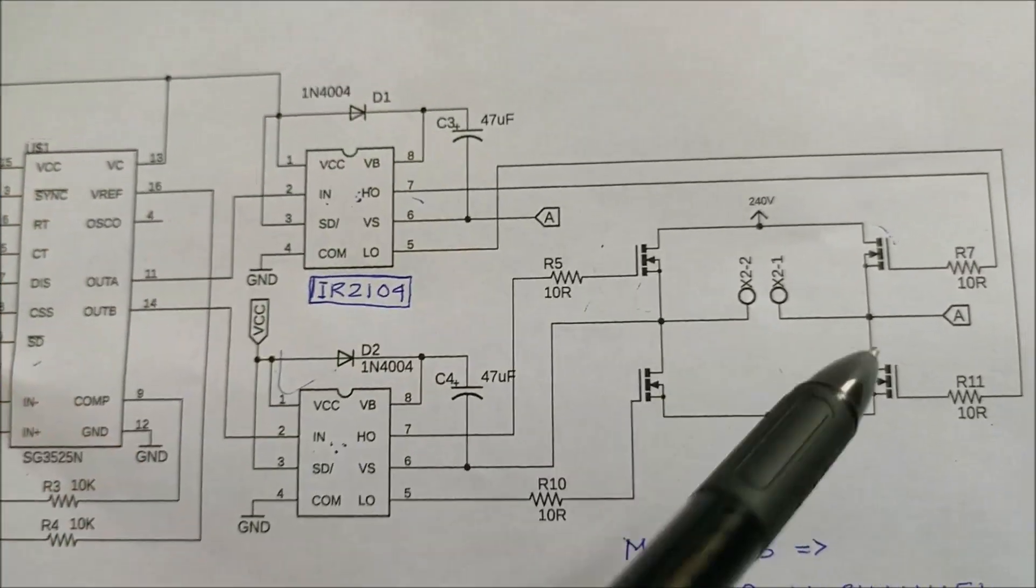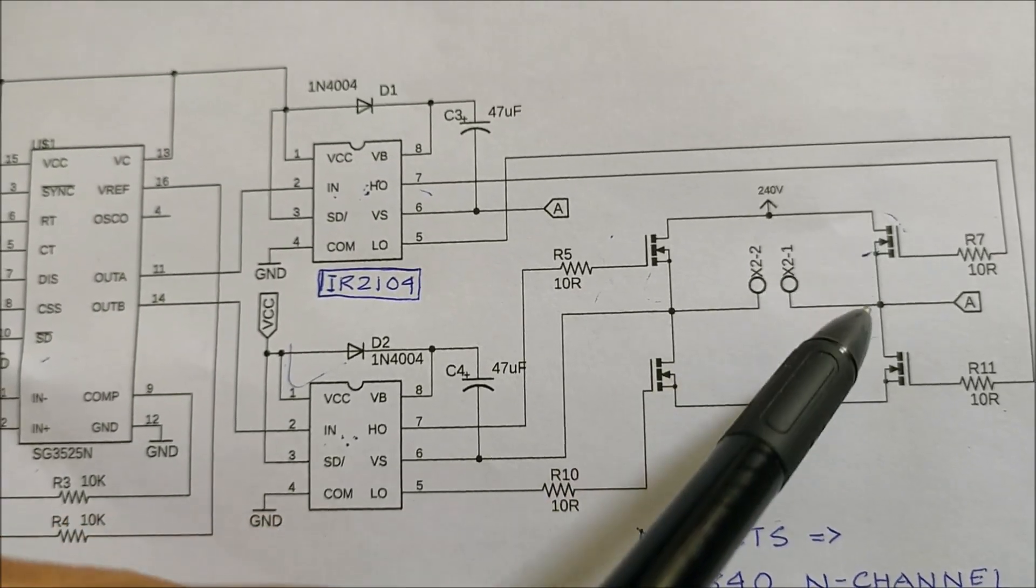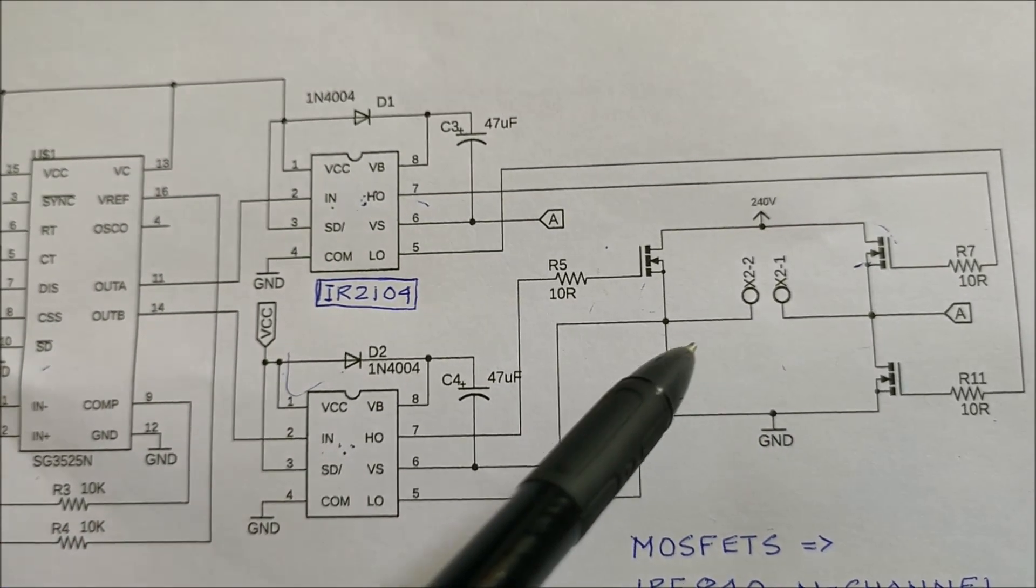For this instance, this high side MOSFET is active and this low side MOSFET is active thus making one direction of the current to flow.